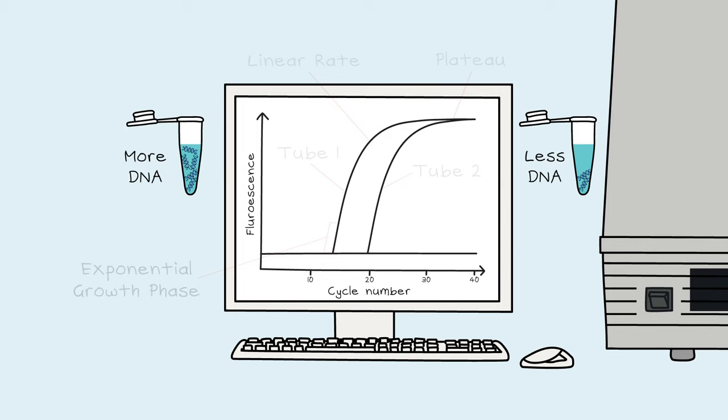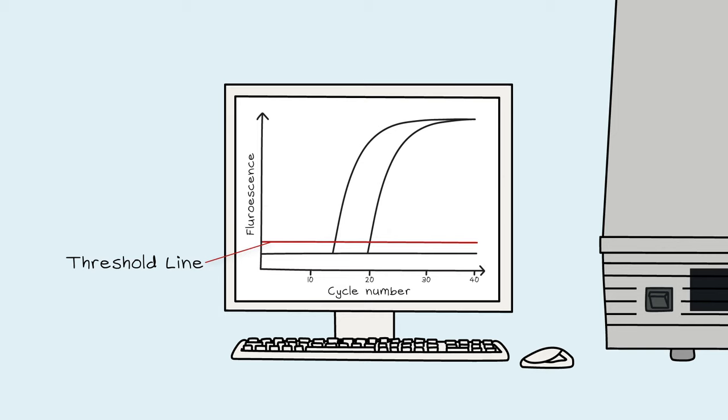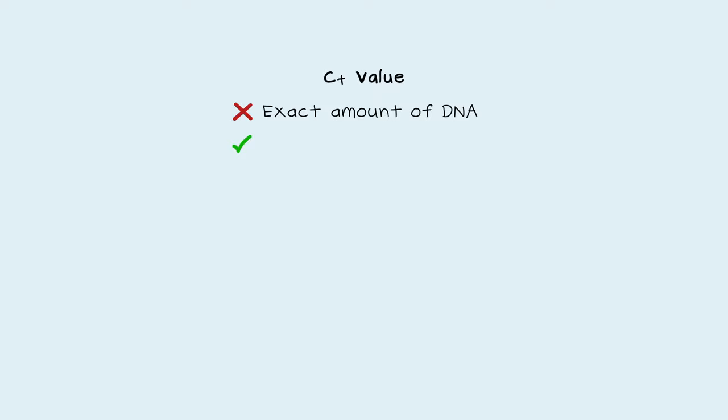The higher the starting amount of DNA, the earlier the PCR will appear above the background. The amount of DNA in different samples is measured using a threshold line. The point that the fluorescence passes this threshold is the cycle threshold, or CT, of the PCR. The threshold is set above the background and during the exponential phase of the PCR. The CT value is a measure of how much DNA is in the sample. But the CT value can't tell you the exact amount of DNA in the tube. It can only tell you a relative amount.